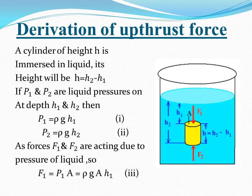To derive the upthrust force, take a cylinder immersed in liquid. The depth of the upper surface is h1 and the depth of the lower surface is h2. The height of the cylinder is h, which equals h2 minus h1. Using the pressure-in-liquids relation derived earlier, p1 equals ρgh1 and p2 equals ρgh2.